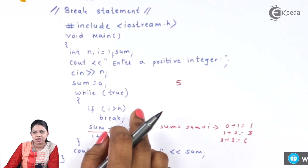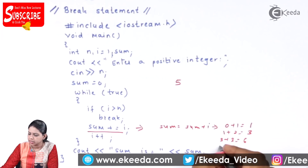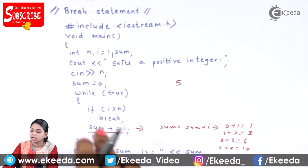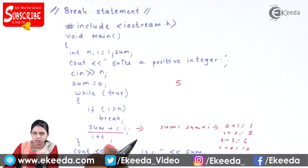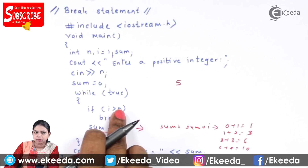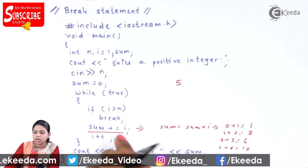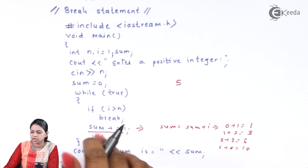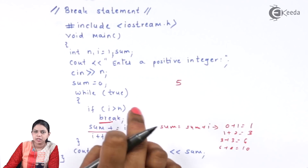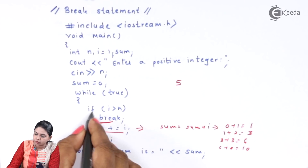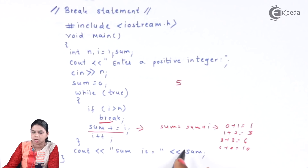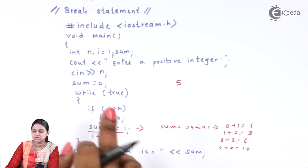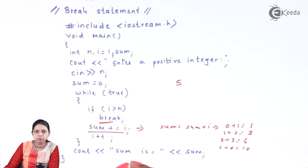Then i becomes 4. Is 4 greater than 5? No, so 6 + 4 = 10. Then i becomes 5. Is 5 greater than 5? No, so again 10 + 5 = 15. Once i becomes 6, is 6 greater than 5? Yes — so immediately break. Your control comes out of the loop and the value of sum gets printed. This is how we use the break statement.